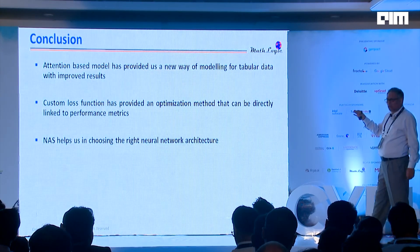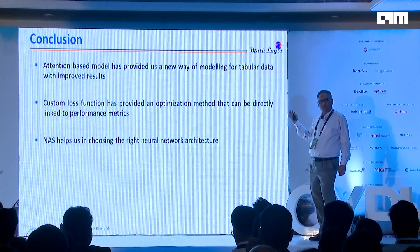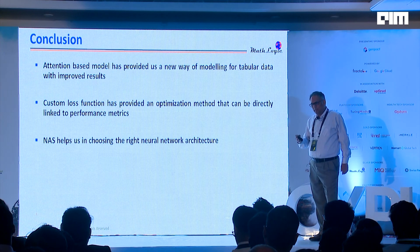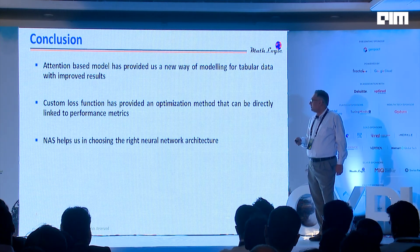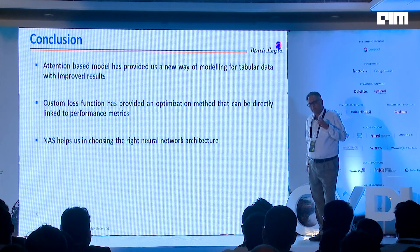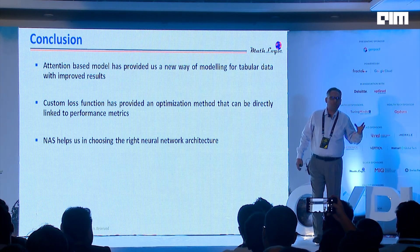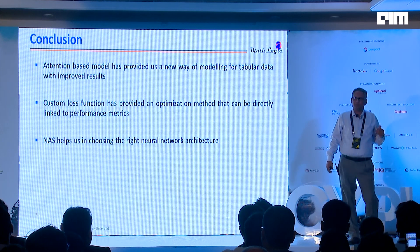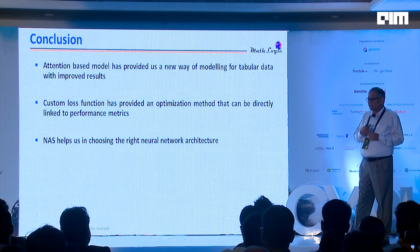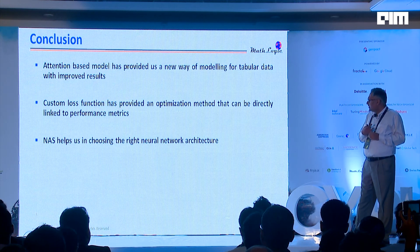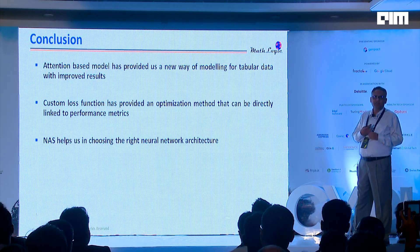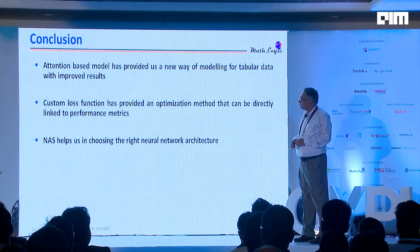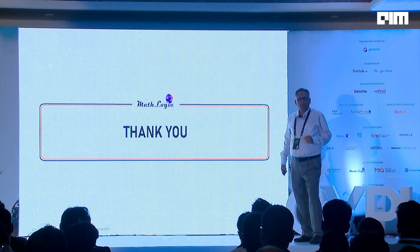So in summary: attention-based models give us a very different way of modelling tabular data with fewer features, fewer parameters, and much better results. Custom loss functions give us a method to optimize what we really want to maximize — ROC, F1, precision recall — aligned to our business objective. And NAS helps us get the right architecture, giving us more options beyond analyst choice. Thank you for listening.